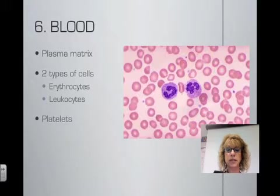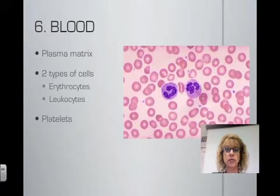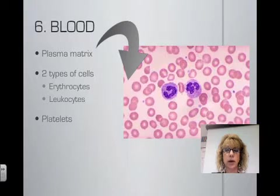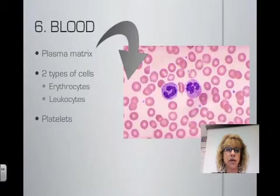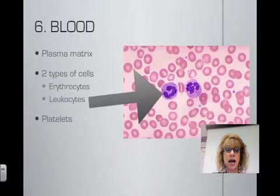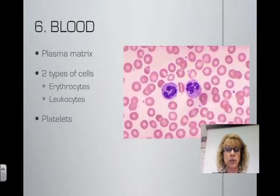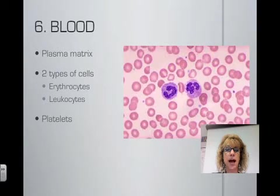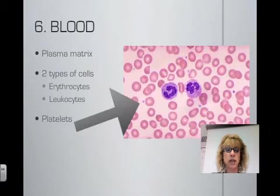The last type of connective tissue we're going to talk about is blood. Blood is unique because it has a matrix of plasma. Plasma is a liquid that contains water, salts, and dissolved proteins. There are two classes of blood cells: erythrocytes, which are red blood cells, and leukocytes, which are white blood cells. We will talk more about those when we get to the circulatory system. Also included in the plasma are particles called platelets that are involved in clotting.